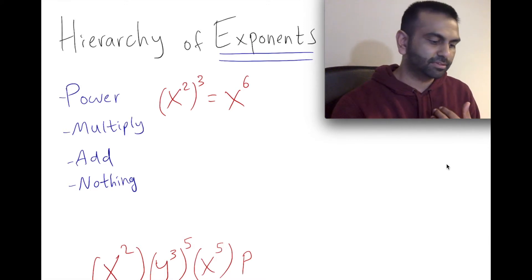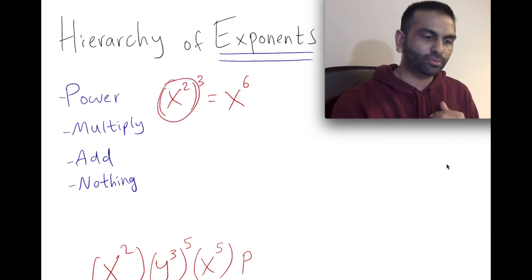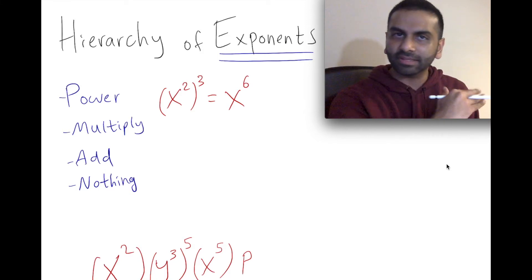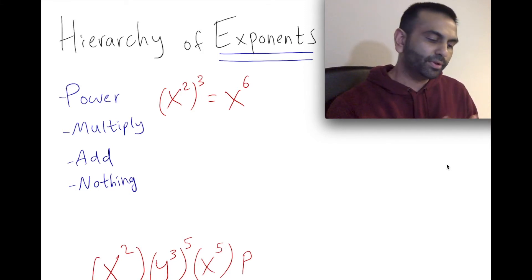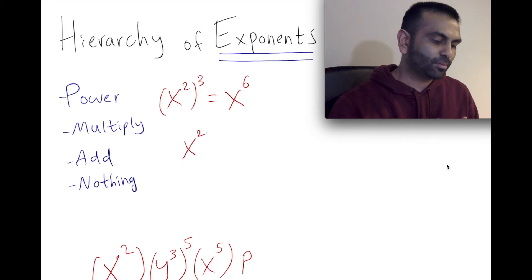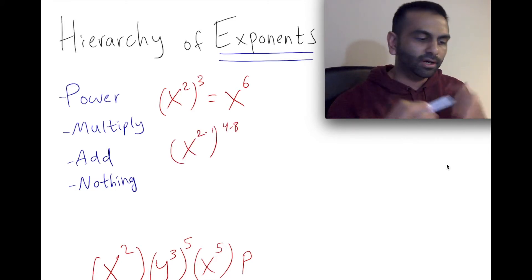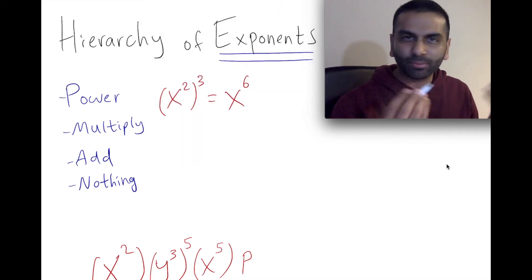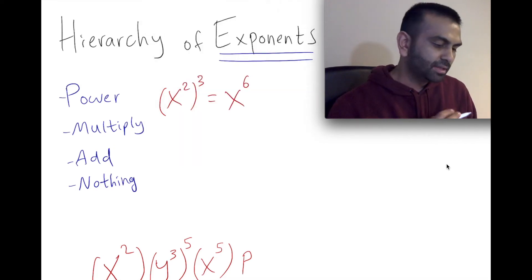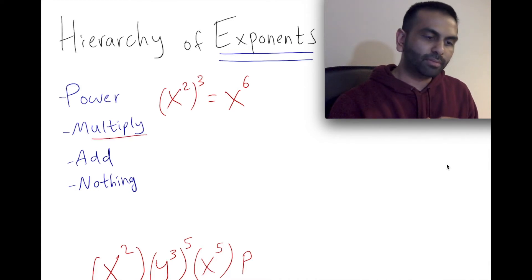You can think about where this comes from — technically you're multiplying x squared times itself three times, which gives six x's multiplied together. But when you have something like x to the 2.1 to the 4.8, that analogy doesn't always hold, so remembering the procedural rule is the easy way to handle it.